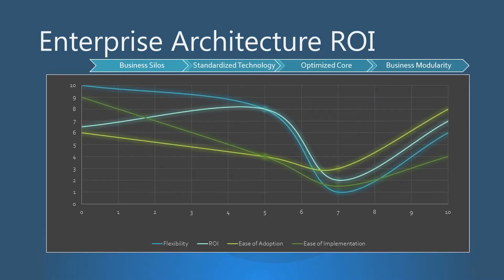So this chart explains what happens when you start integrating your systems. The left side, under 'business silos,' is where your systems are all separate — there's no integrations. You simply access the information in that system directly. You can see it's very flexible, easy to implement, and easy to use. Near the middle, under 'optimized core,' you can see we take a giant dip. This is the result of the integration complexities we've talked about. You have inadvertently removed any flexibility you might have, and the implementation can be quite difficult. You may have never had to sit down and define all your complex business processes, but this is where you're forced to do that.